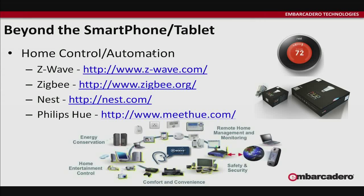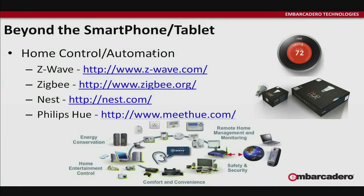Z-Wave seems to be the most predominant alliance for a lot of home automation devices. Zigbee is another alliance, so you can check those out. Nest is plug-replaceable for your current programmable or non-programmable thermostat. And then there are the Philips Hue lights to play with.